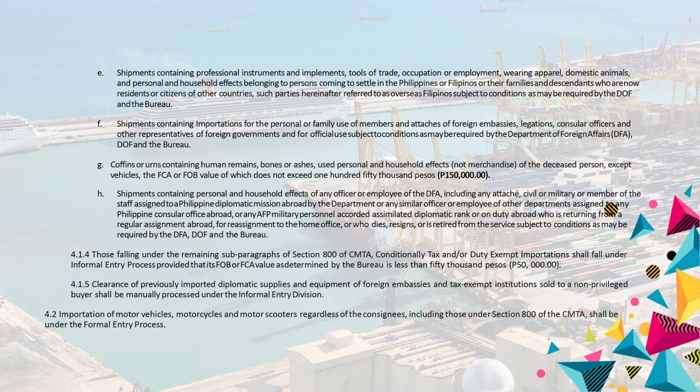4.1.4 Those falling under the remaining subparagraphs of Section 800 of CMTA, conditionally tax and/or duty-exempt importations, shall fall under informal entry process provided that its FOB or FCA value as determined by the Bureau is less than 50,000 pesos. 4.1.5 Clearance of previously imported diplomatic supplies and equipment of foreign embassies and tax-exempt institutions sold to a non-privileged buyer shall be manually processed under the informal entry division. 4.2 Importation of motor vehicles, motorcycles and motor scooters regardless of the consignees, including those under Section 800 of the CMTA, shall be under the formal entry process.